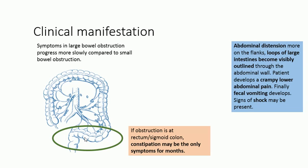The clinical manifestations: large bowel obstruction symptoms are not as severe as small bowel obstruction symptoms because the colon can absorb fluid and has greater distension capacity. Symptoms progress more slowly. If the obstruction is at the rectum or sigmoid colon, constipation may be the only symptom for months. The patient also presents with abdominal distension as the bowel loops swell up.